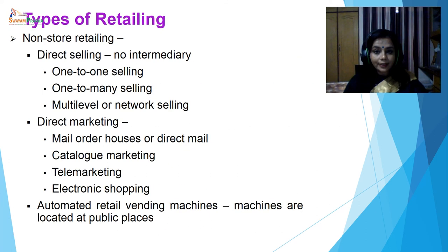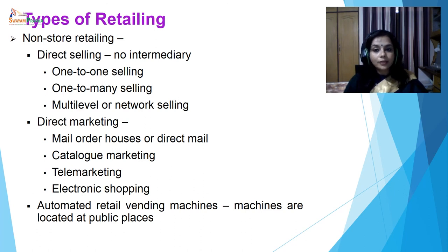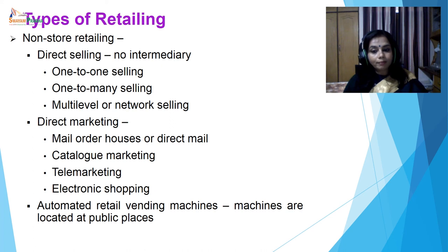Non-store retailing includes direct selling where there is no intermediary — one-to-one selling where a salesperson visits the customer's place, or one-to-many selling where a salesperson meets a group of customers. Multi-level or network selling is popular in companies like Avon, which recruits independent business persons who in turn recruit others. Direct marketing is broader than direct selling, including mail order houses, catalog marketing, telemarketing where salespersons close sales over the telephone, electronic shopping or online selling, and automated retail vending machines placed at public places.